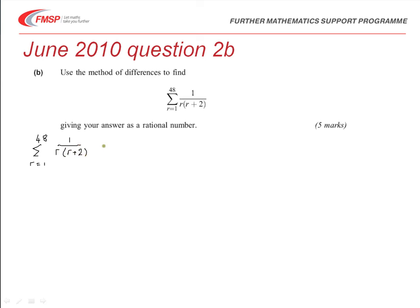So, we can use our partial fractions to split this up. So, we get the summation, and this time we know that this is going to be a half, 1 over r.